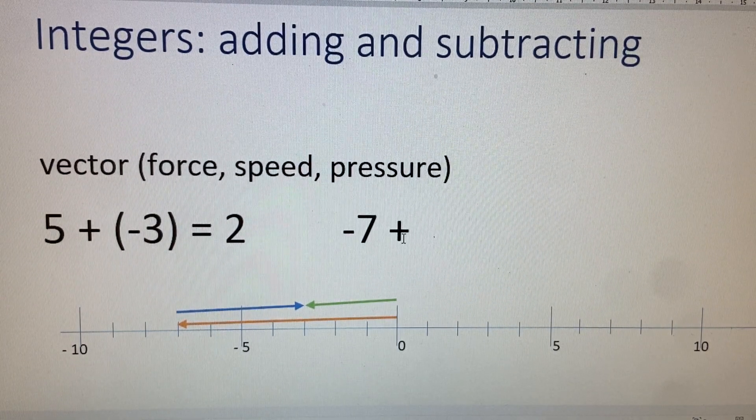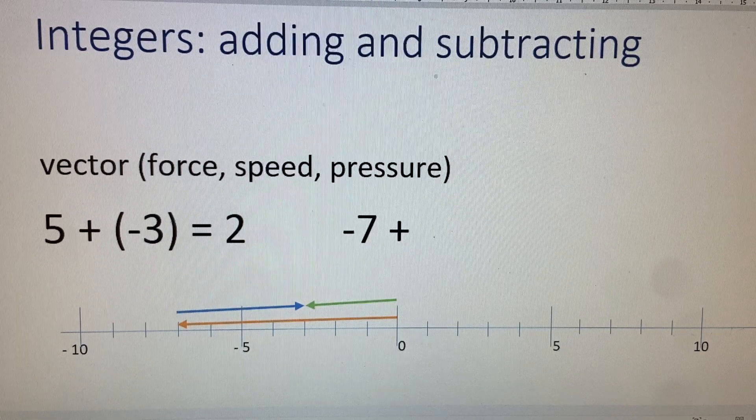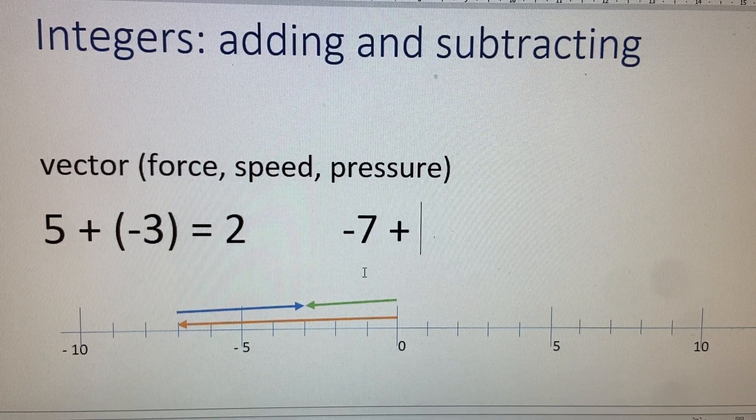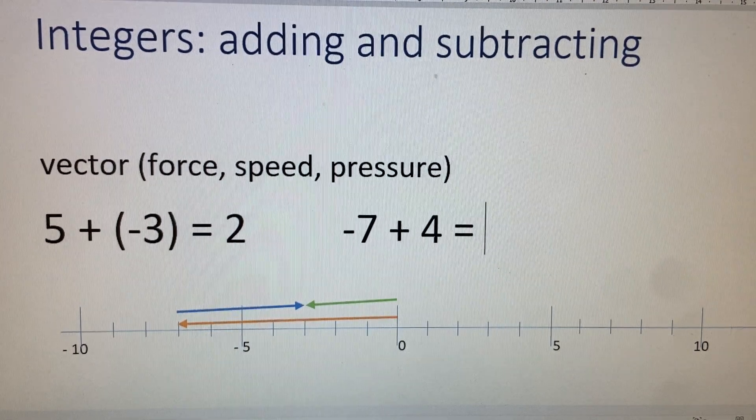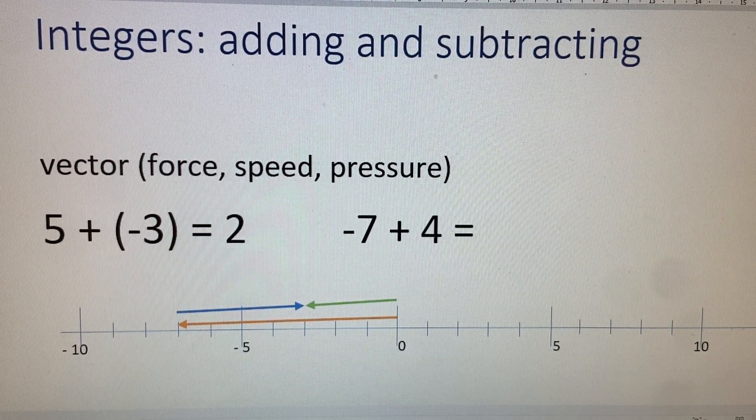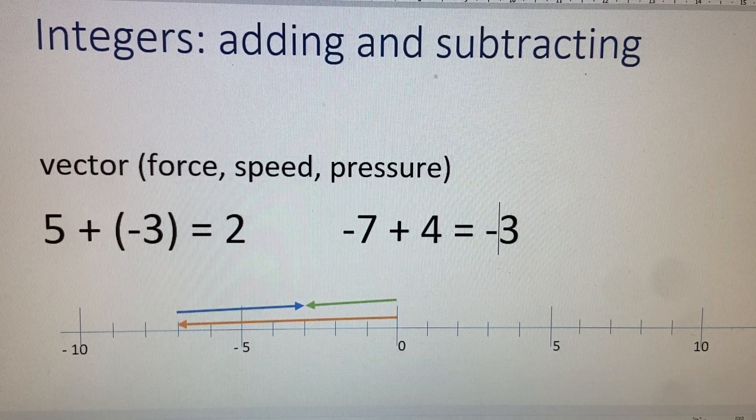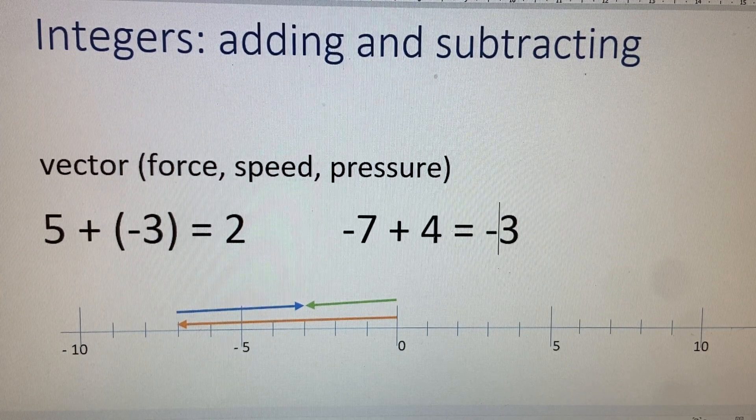And to this, a positive counting by ones. One, two, three, four was added. And the resultant vector is three units long, but it's going in the negative direction.